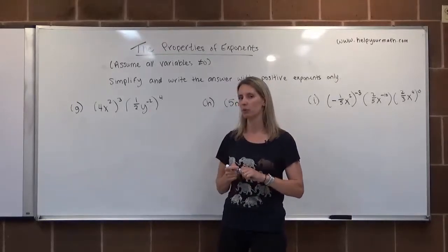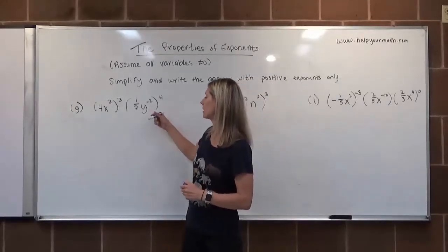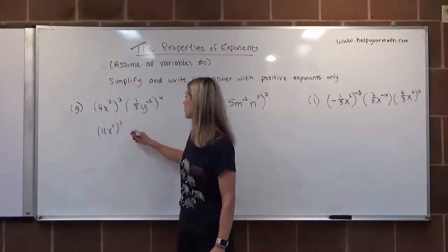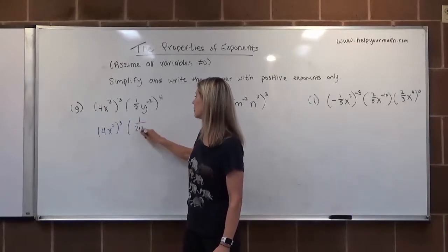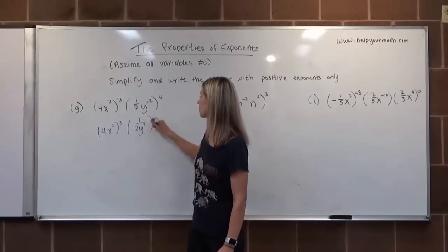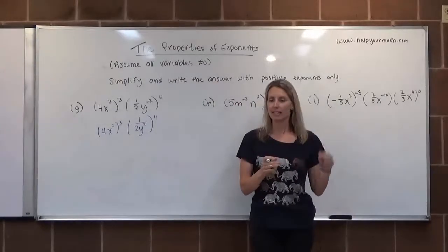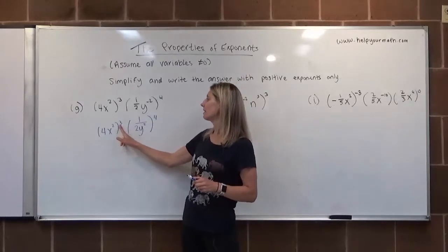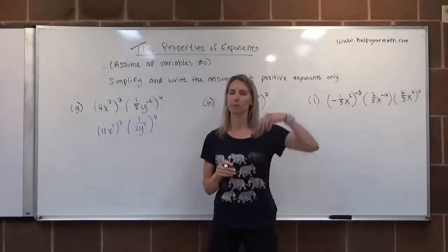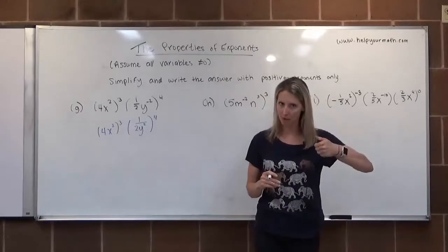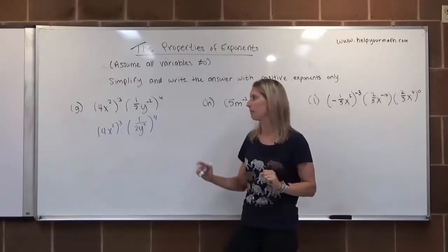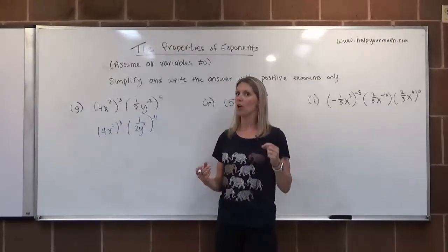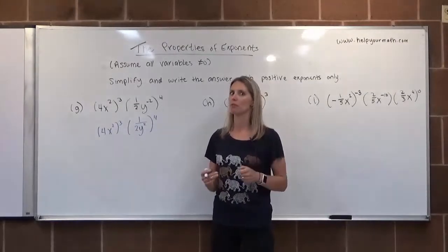Inside the parentheses, 4x squared is fine, but we have y to the negative 2 — I'm not happy with that. That y to the negative 2 wants to be in the denominator. So I'm going to rewrite this and put y squared in the denominator, where it can join the 2 that's already down there. Now that everything inside the parentheses has a positive exponent, we're going to distribute the exponents to each factor — numbers are factors too.